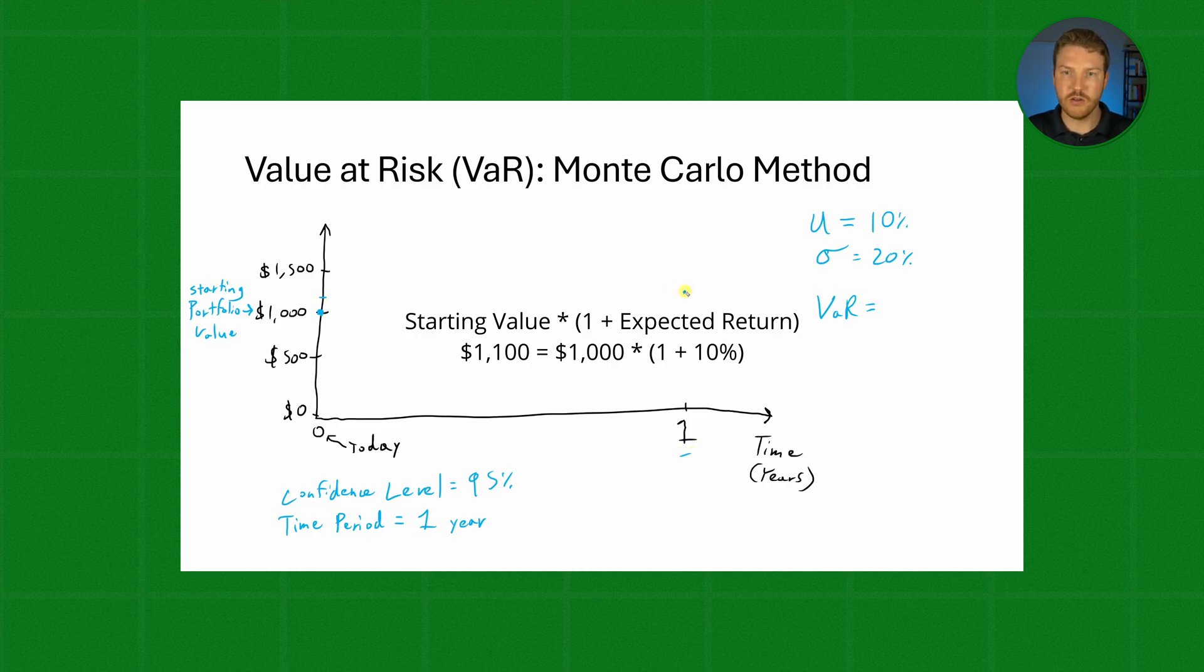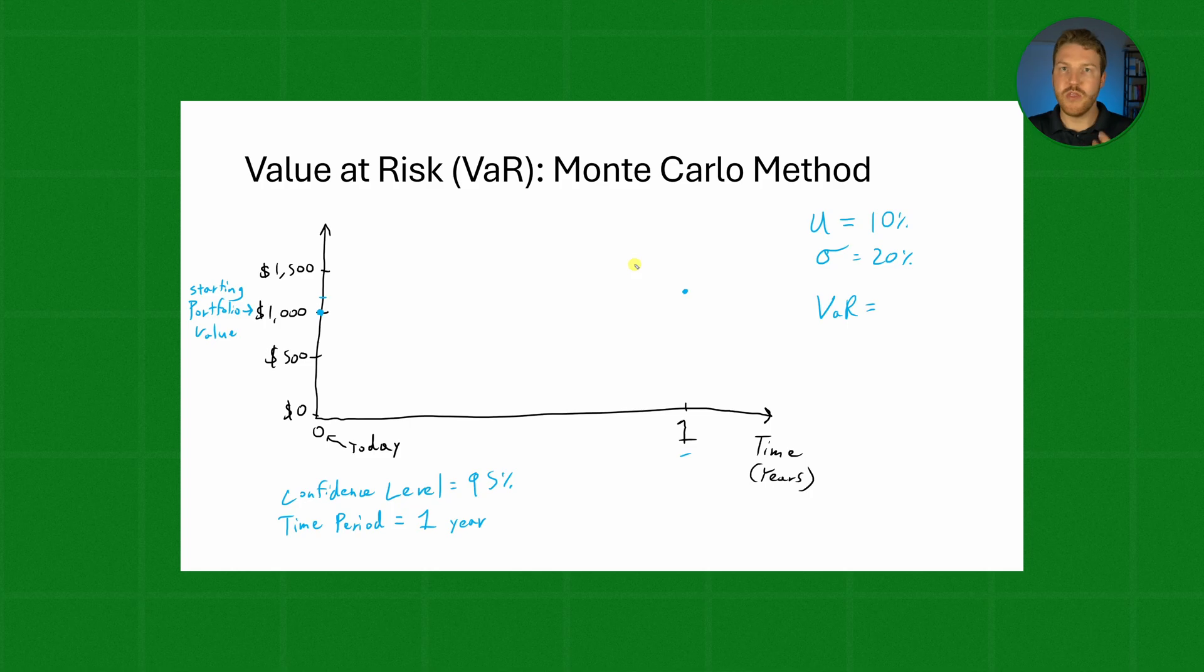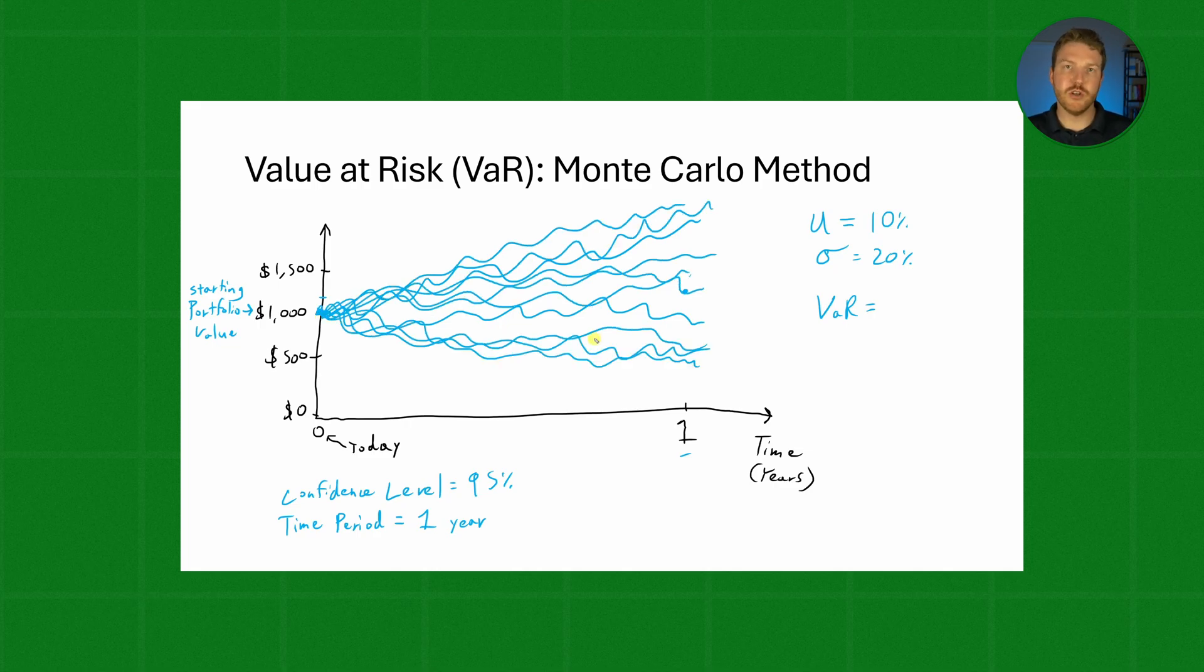So if we do thousands of simulations, we're going to have so many results that go so many different ways. Every single simulation starts out at $1,000 and then it progresses over time. And let's say we did this thousands and thousands of times, then we take all the results and we take basically the fifth percentile worst outcome of all the results.